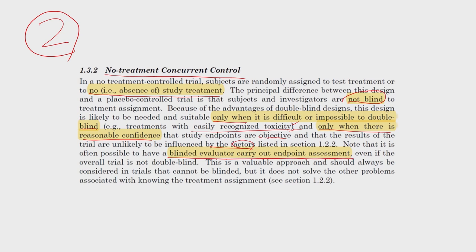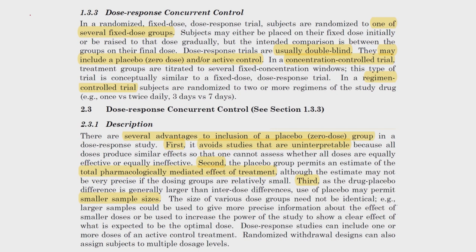In the no-treatment concurrent control, the participants and investigators know there is no blinding, but the assessors and evaluators need to be blinded at least. For the third type — dose-response concurrent control or low-dose control — there are several fixed dose groups and randomization is done across these dose groups. A placebo group can be included or not, and usually double blinding is applied. Whether to include a placebo or active control is a decision the sponsor must make, depending on the number of participants and study duration.